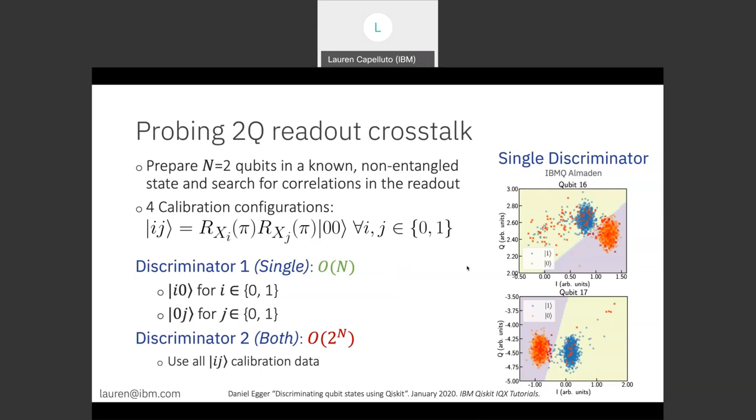It's important to note that the runtime of these two discriminators is very different. So if we only need to use a subset of the data for discriminator one, then we can perform all of our readout calibrations in linear time with respect to the number of qubits. But if there's significant crosstalk, we would need an exponential number of calibrations to accurately calibrate the device.